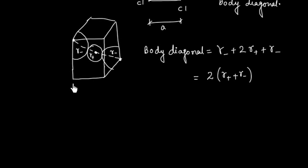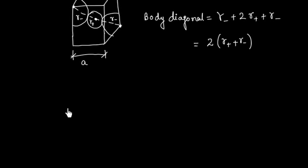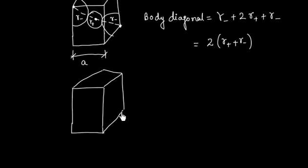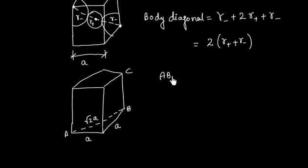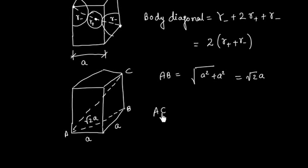The body diagonal is equal to √3·a, where a is the edge length. Let us prove this. If this length is a and this length is a, then the face diagonal AB will be √(a² + a²) = √2·a. Now we calculate the body diagonal AC using Pythagoras theorem.